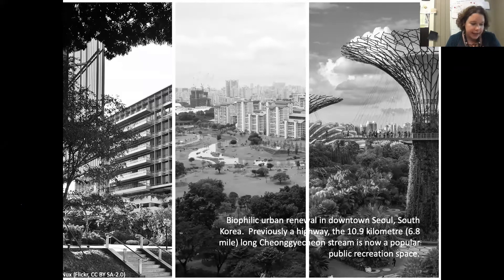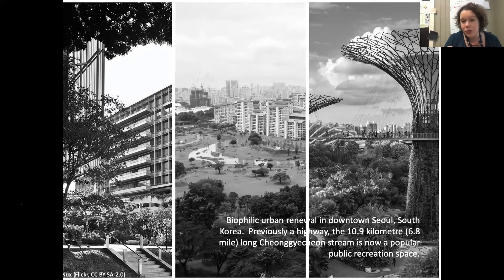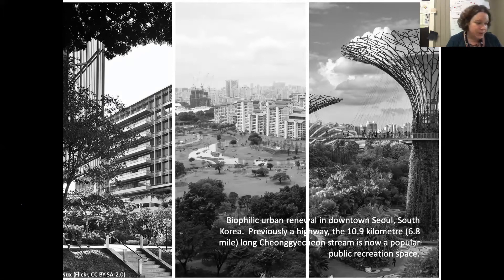Singapore is very committed to being a garden city. Downtown Seoul turned a former highway into a wonderful stream and green space. Research shows the more trees there are, the less crime there is. Exposure to greenery reduces neural pathways linked to depression. There's a lot of great data showing the benefits of green spaces, and we need to advocate for designs that link us to outdoors, nature and animals.